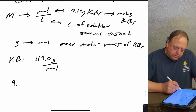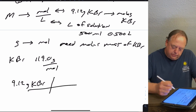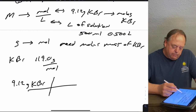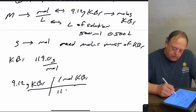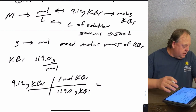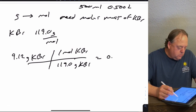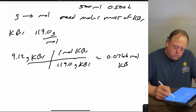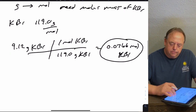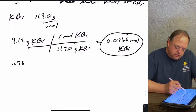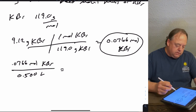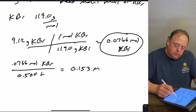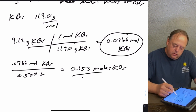Now set up dimensional analysis: 9.12 grams of KBr is on top, so grams go on the bottom of the conversion factor — that's 1 mole of KBr over 119 grams of KBr. That gives 0.0766 moles. Dividing by 0.500 liters of solution gives a molarity of 0.153 moles of KBr per liter of solution.